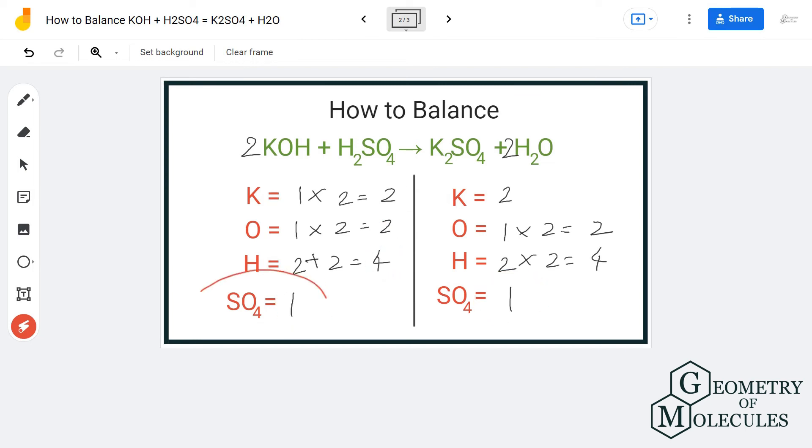So the trick here is to use the SO4 group as is, to count it as is because it's the same on both sides, and that will make your job really easy. I hope this video helps you understand how you can balance any given chemical equation.